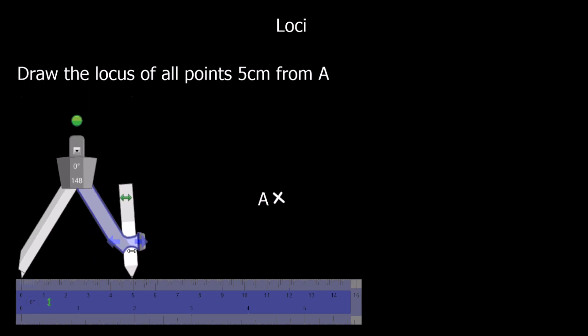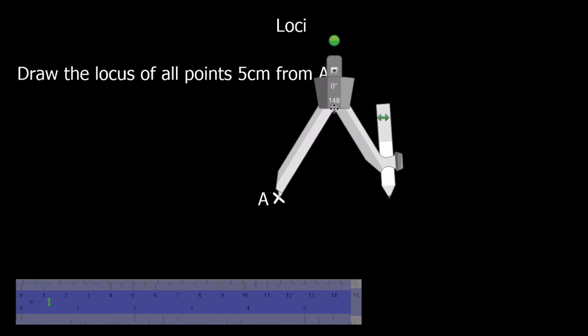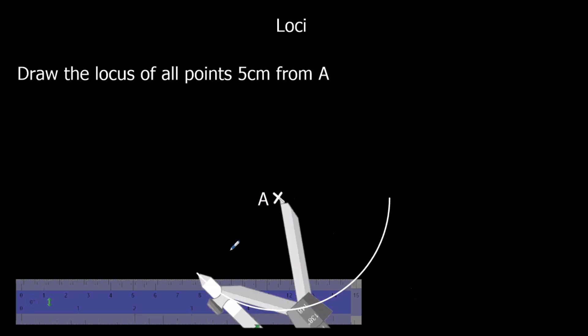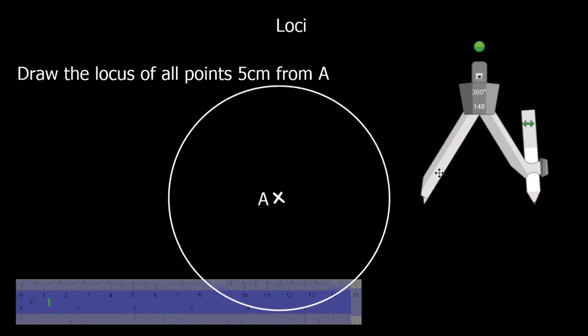So take that out to 5. Place it on A. And then it's just the circle. So all the way around. And that's all it is.